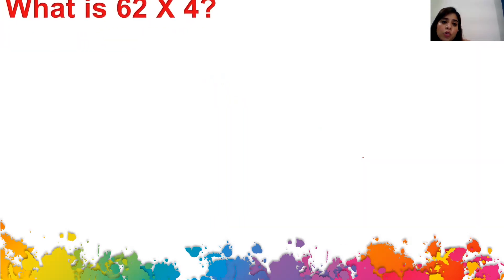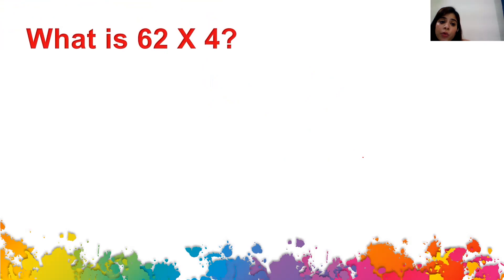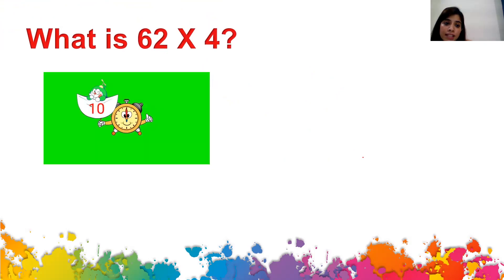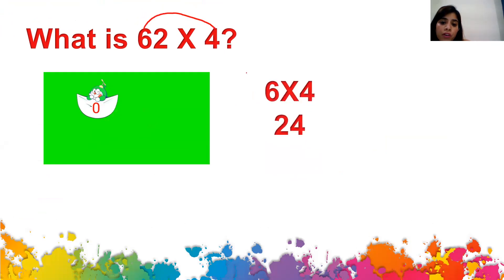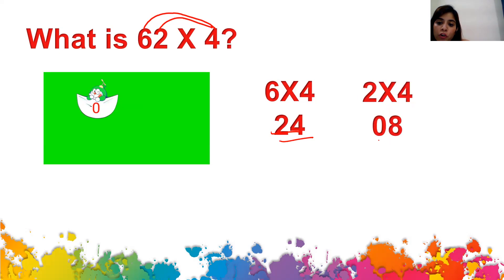Now practice with me! The question is 62 times 4 — I'll give you 10 seconds. The answer: first multiply 6 times 4 which is 24, then multiply 2 times 4 which is 8. 24 plus 0 is 24, then write 8 as it is — the answer is 248.